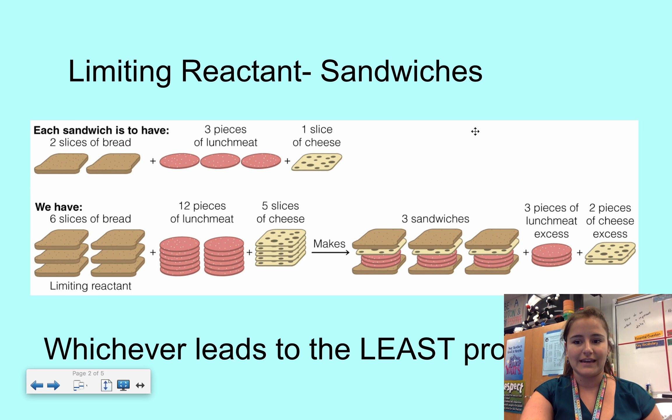So I'll have three sandwiches, I'll have some leftover lunch meat and some leftover cheese, which makes the bread my limiting reactant. It's whichever one leads to the least product. If I used all my cheese, I could make five sandwiches. But guess what? I can't use all my cheese because I don't have enough bread.